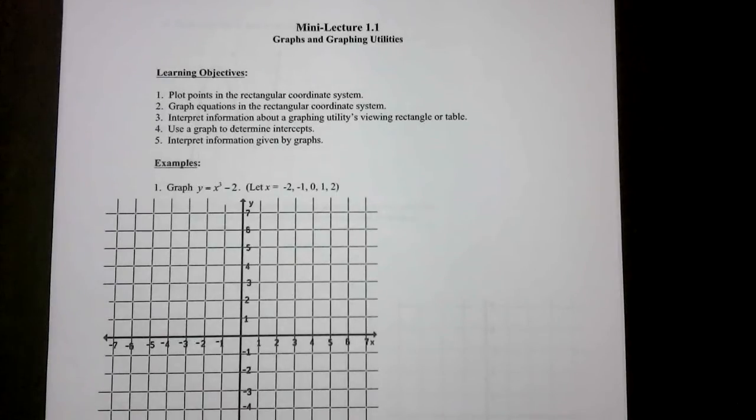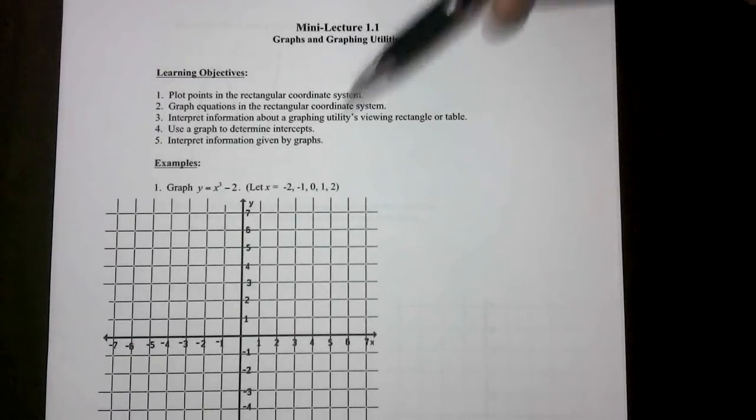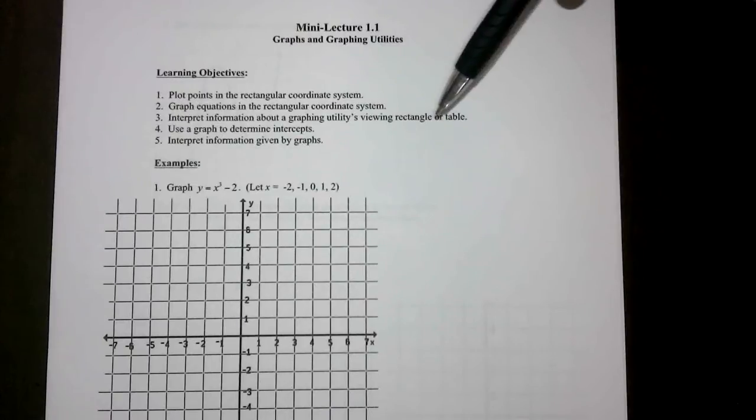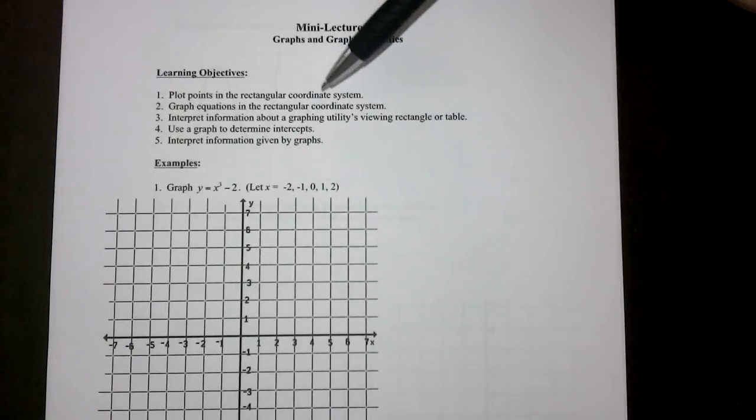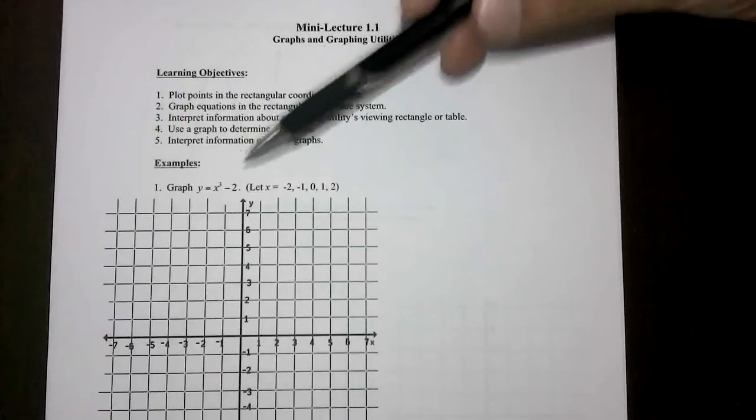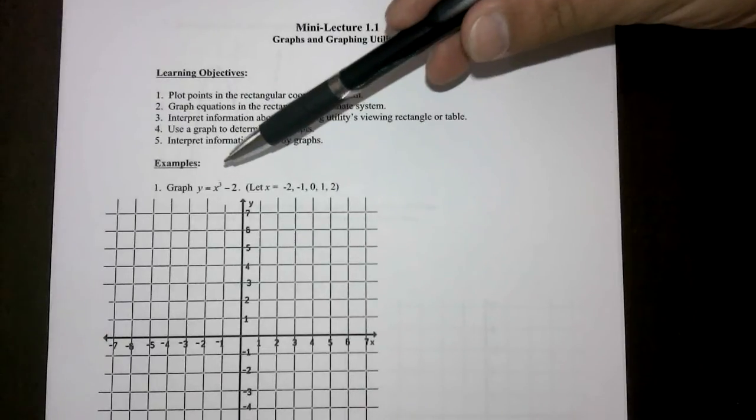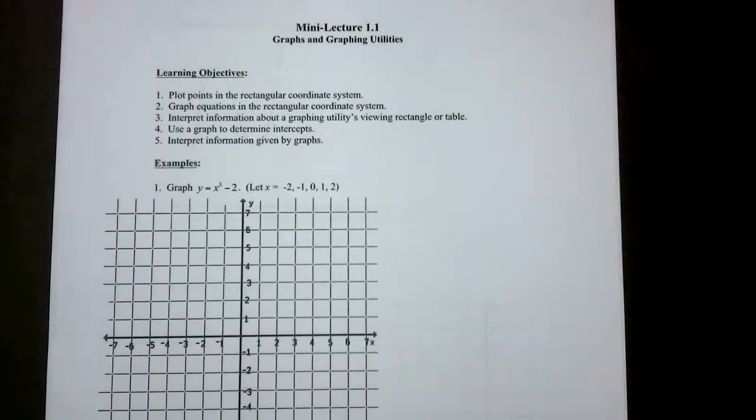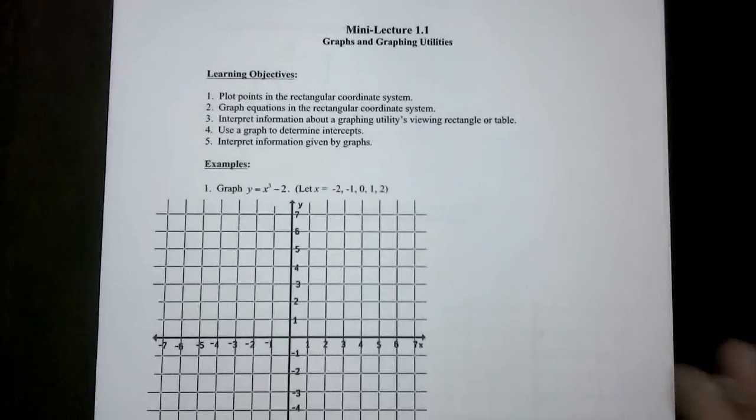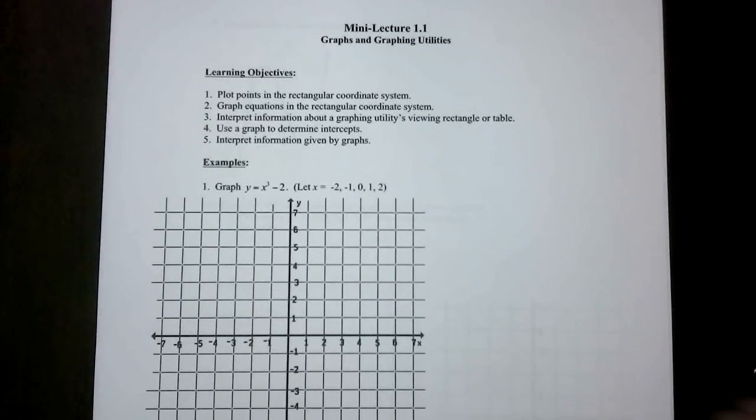We've made it through reviewing Algebra 1 and Algebra 2. We'll start to look at actual pre-calc material from here on out, but what's nice is that with this first section, 1.1 graphs and graphing utilities, a lot of this is really just reiterating graphing, working in the coordinate system, graphing equations where some of them might be a little bit more intense. Here we have an x³ term, which is nothing we can't handle because we've taken Algebra 2.